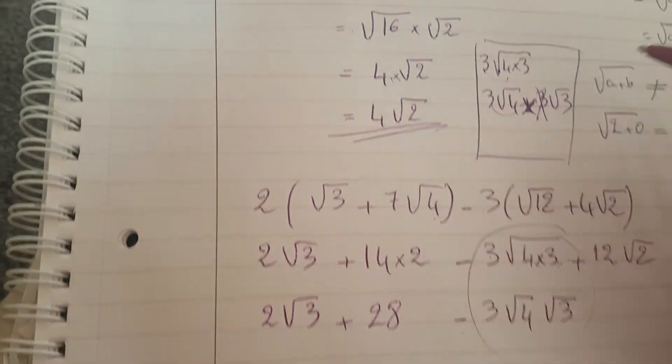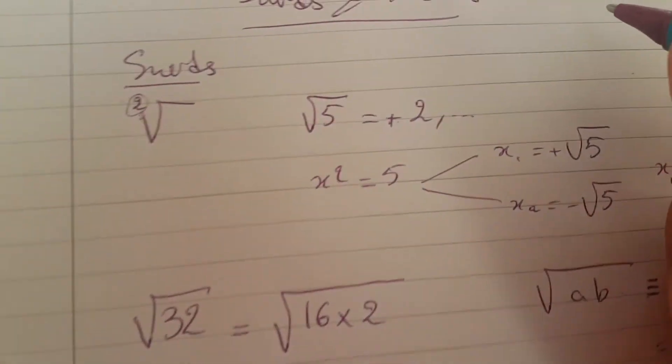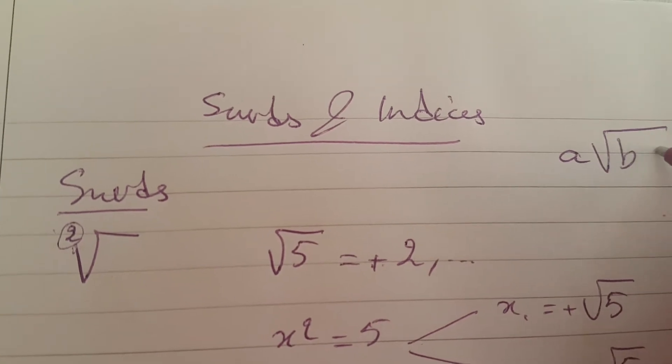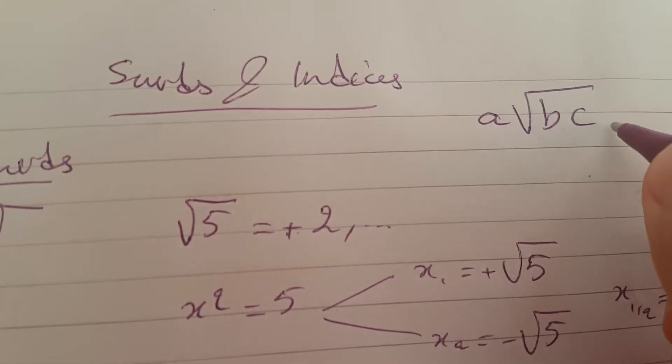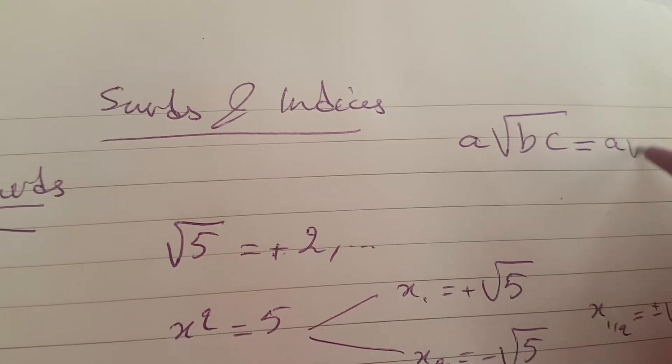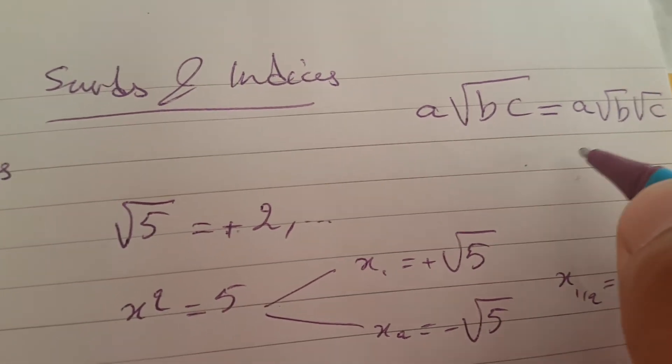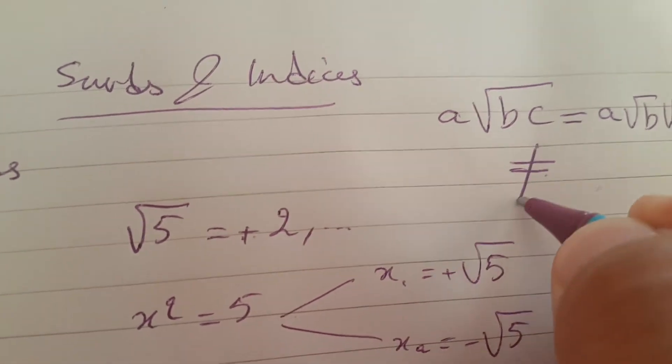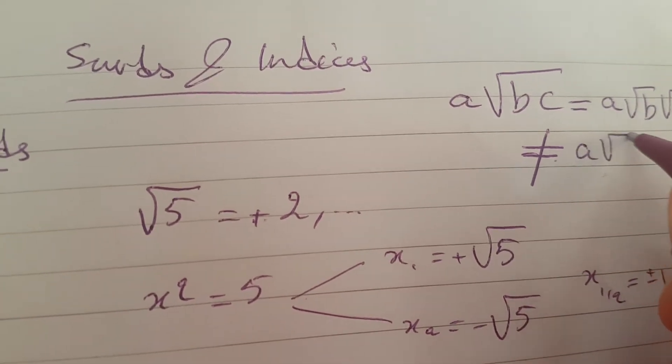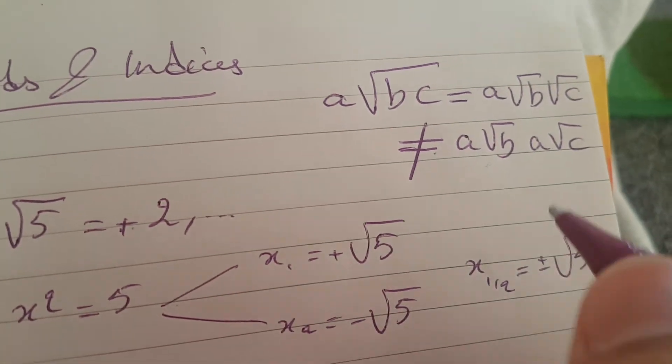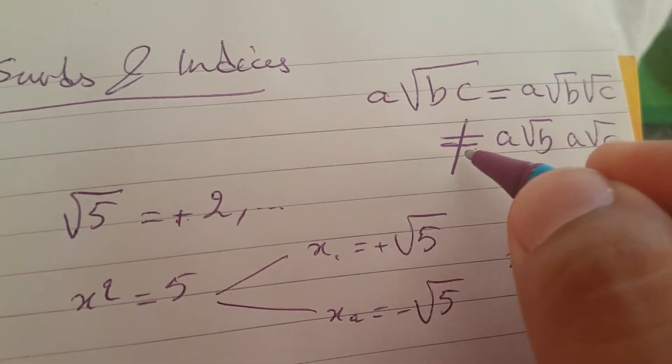Here, I'm going to write it: if we have a square root of bc, it is a square root of b square root of c. It is not, it is not a square root of b times a square root of c. That is a misconception, don't do this please.